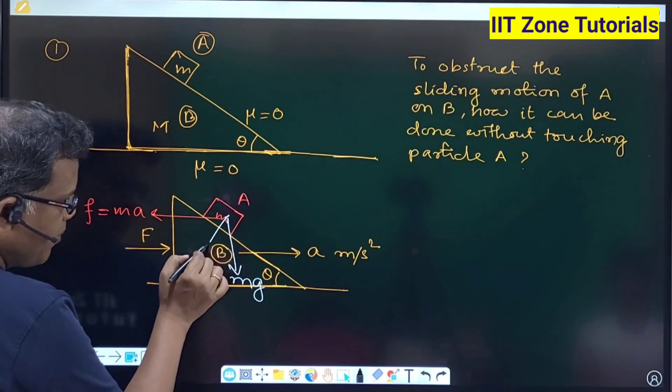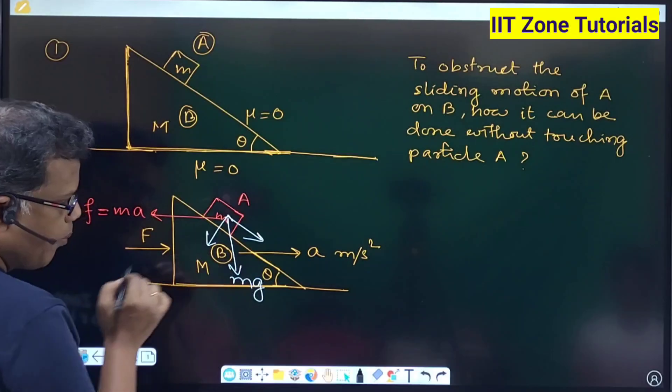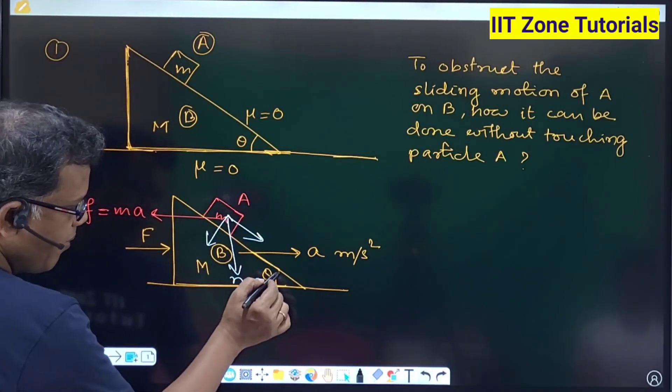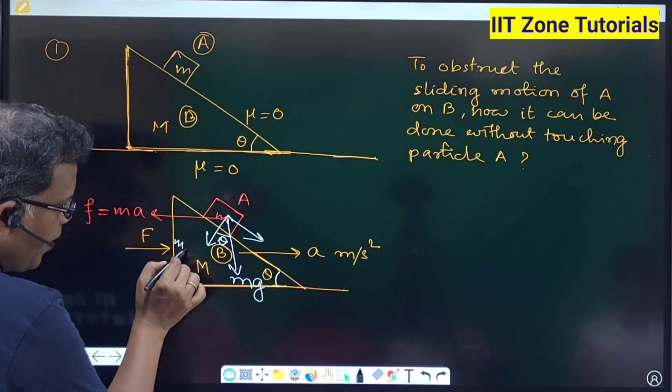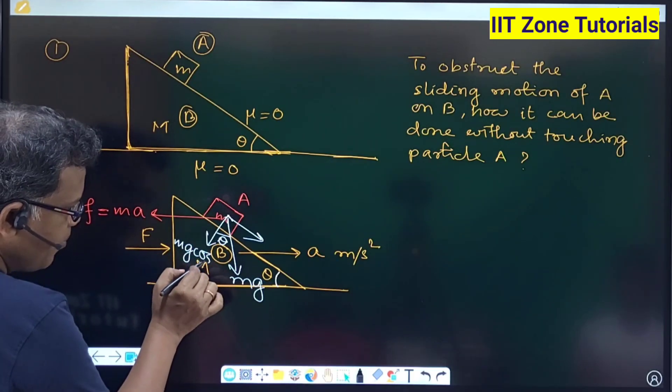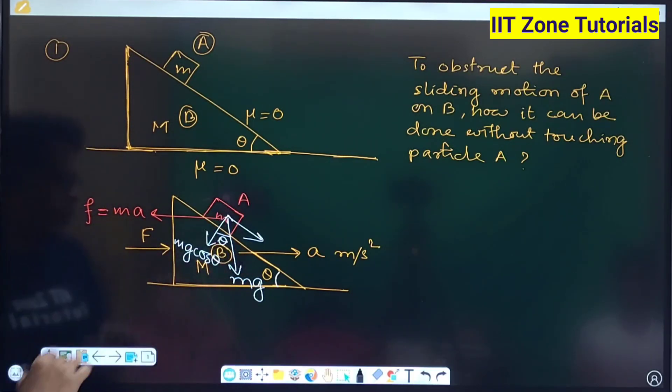If I resolve this Mg into component I will get the components like this. Geometry wise this is theta so this will be theta again. So this component will be Mg cos theta, that is the weight component perpendicular to the surface of contact will be Mg cos theta.